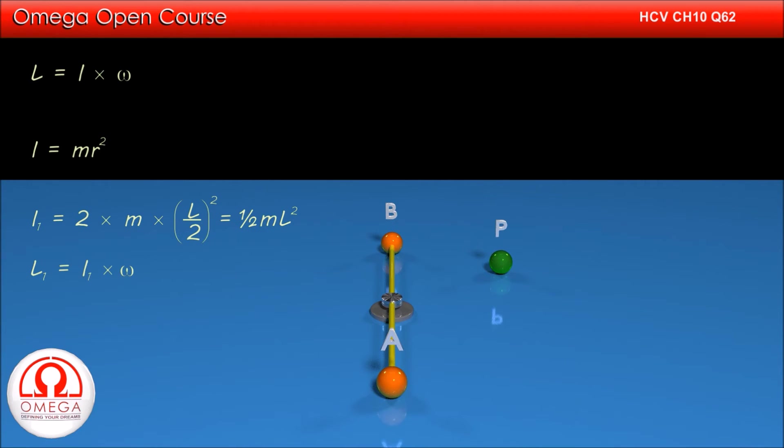Multiplying moment of inertia with initial angular speed, we get the initial angular momentum. Thus, initial angular momentum of the system is ML squared by 2 times omega.